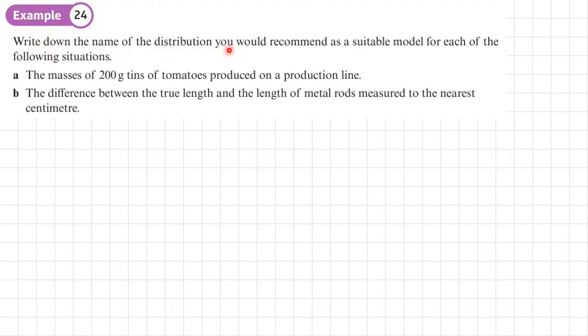Example 24. Write down the name of the distribution you would recommend as a suitable model for each of the following situations. So part A, we have the masses of 200 gram tins of tomatoes produced on a production line. Now we would expect most of the 200 gram tins to be around the 200 gram mark. Some to be a bit more, some to be a bit less. But really, the vast majority should be around that 200 gram mark. So what we're going to have is a normal distribution where the mean there is 200 grams. Now we don't know what the standard deviation or the variance is. So the type of distribution would be a normal distribution. So we would probably have something like X is normally distributed with a mean of 200 grams with a given variance.